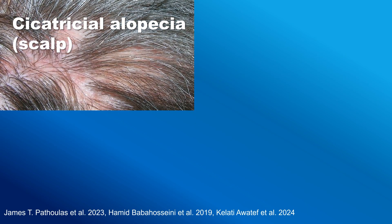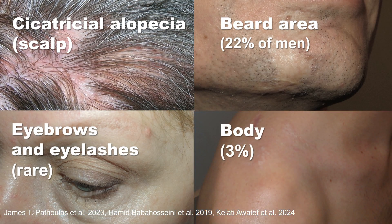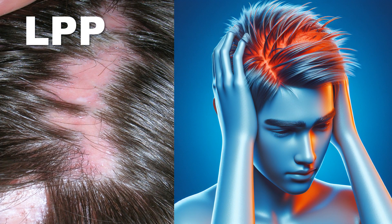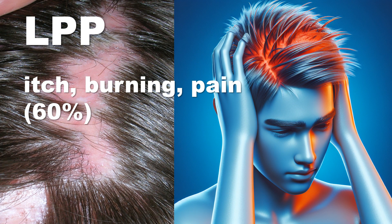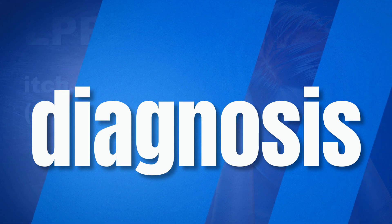Classic lichen planopilaris affects the scalp, but it may also affect the beard area in 22% of men, the eyebrows and eyelashes, and the body hair. But hair loss is not the main complaint of patients with lichen planopilaris. The main complaint is the presence of itch, burning, and pain.